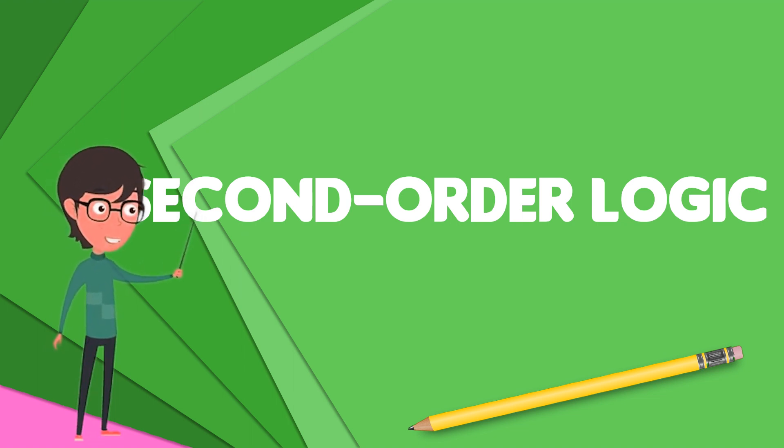For example, the second-order sentence PX says that for every unary relation P of individuals, and every individual X, either X is in P or it is not.